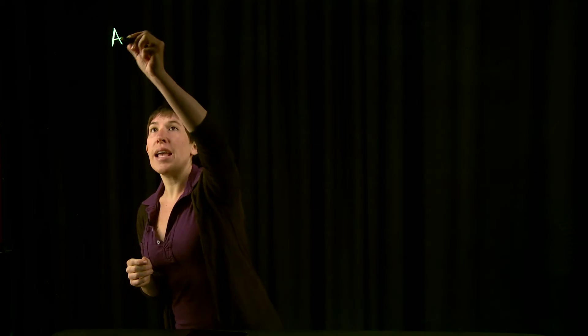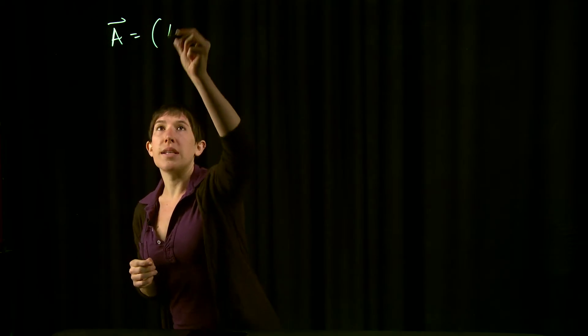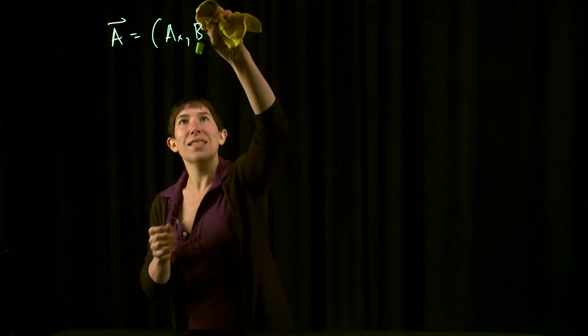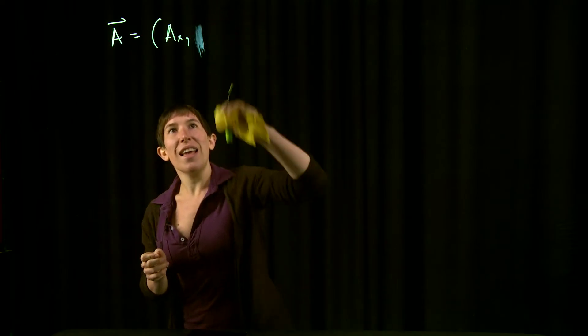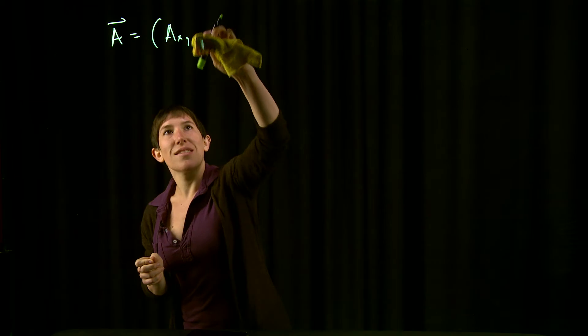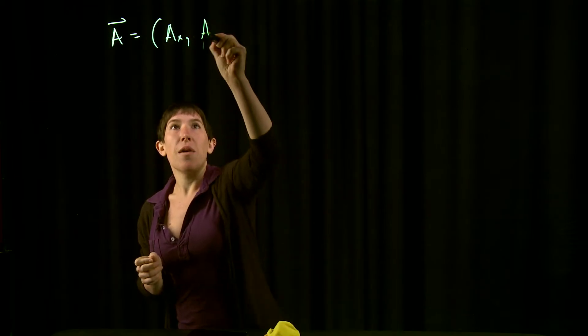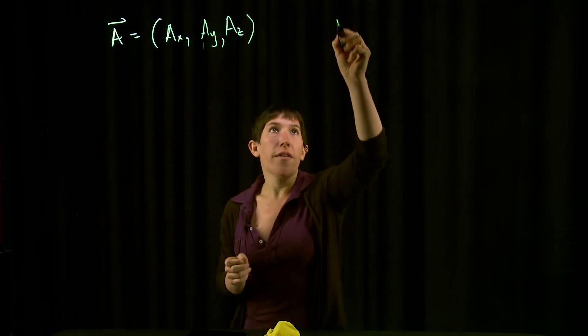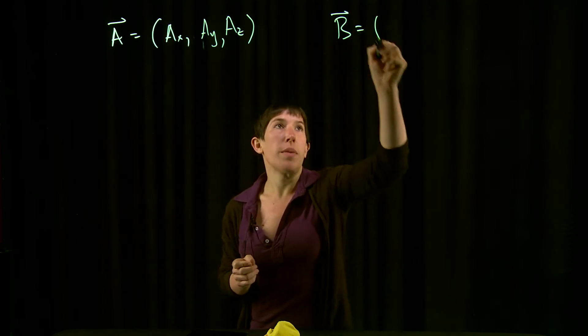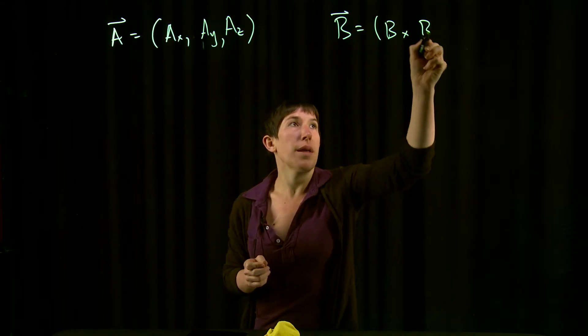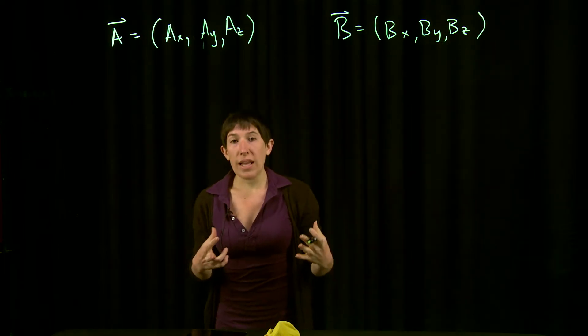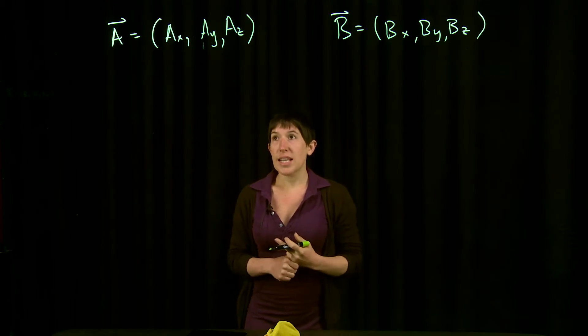If we have two vectors, let's say we have vector A which has components Ax, Ay, Az, and then you have vector B similarly with components Bx, By, Bz, and we want to think of different ways of multiplying these vectors together.